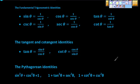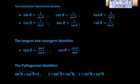In just a minute we're going to verify trigonometric identities by transforming the left side into the right side. But first, if you would pause this video and write down these fundamental trigonometric identities, including the tangent and cotangent identities and the Pythagorean identities. Once you've done that, unless you already have them memorized, start the video again and we'll do the problems.